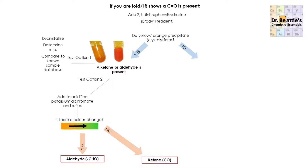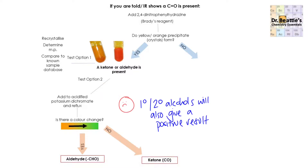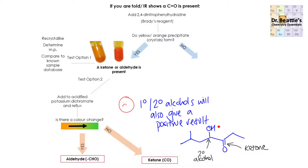If you just want to distinguish whether it is a ketone or an aldehyde, you can add the sample to acidified potassium dichromate and reflux. Aldehydes can be oxidised to carboxylic acids, so they will show a colour change from orange to green, whereas ketones cannot be oxidised, so they won't show a colour change — it will remain orange, and therefore you know you've got a ketone. However, the problem with this test is that primary and secondary alcohols will also give you a positive result — so if your compound contains, for example, a ketone and a secondary alcohol, the secondary alcohol will be oxidised to a ketone itself, causing a colour change and giving a false positive.